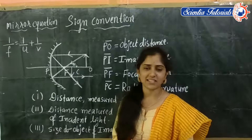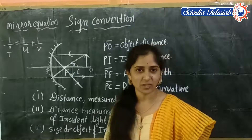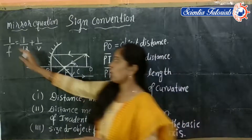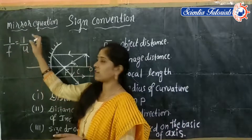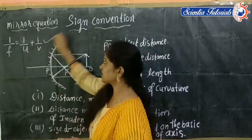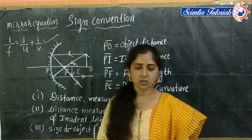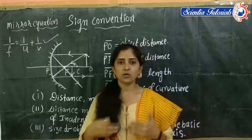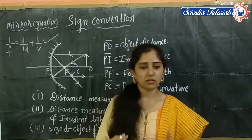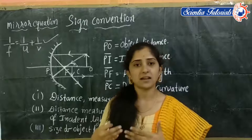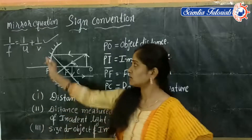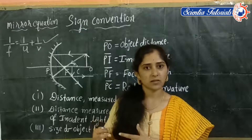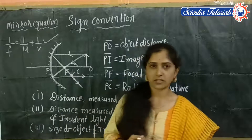To understand the sign convention we should know about the mirror equation. The mirror equation is: 1 over f equals 1 over u plus 1 over v. We use the mirror equation to find the object distance, image distance, or focal length when solving problems.